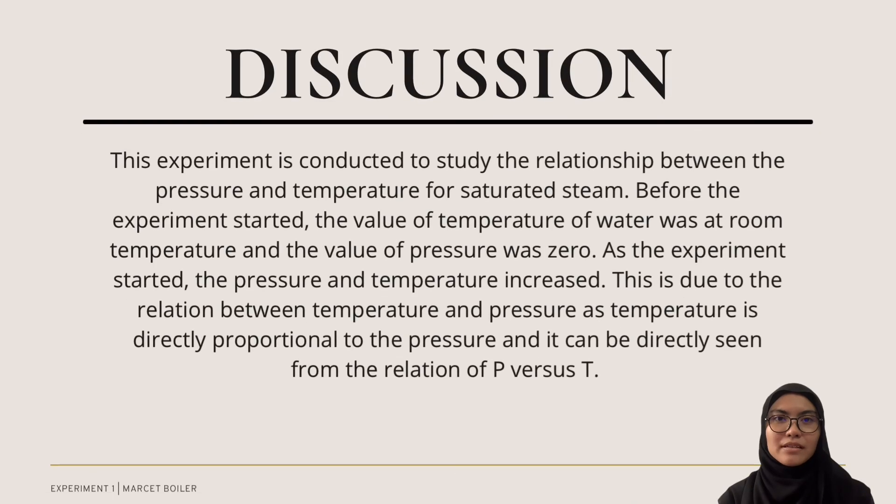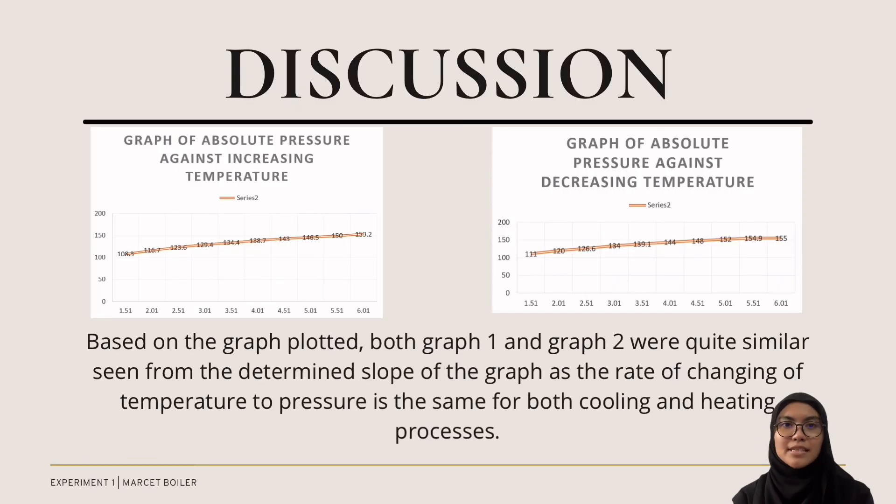For the discussion part, the observations during the experiment are discussed. This experiment is conducted to study the relationship between the pressure and temperature for saturated steam. Before the experiment started, the value of temperature of water was at room temperature and the value of pressure was zero. As the experiment started, the pressure and temperature increased. This is due to the relation between temperature and pressure, as temperature is directly proportional to the pressure, and it can be directly seen from the relation of pressure P versus temperature T.